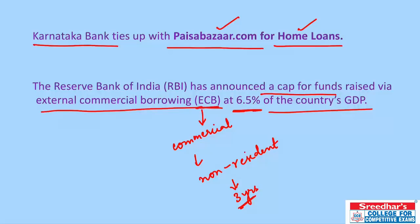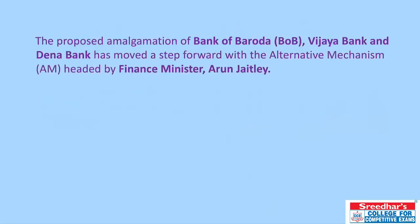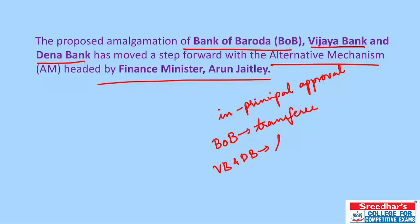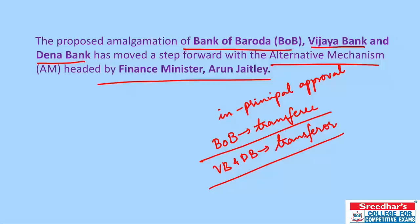The proposed amalgamation of Bank of Baroda, Vijaya Bank, and Dena Bank has moved a step forward with the Alternative Mechanism headed by Finance Minister Arun Jaitley. Under this mechanism, the merger will be given in-principle approval. Bank of Baroda will be the transferee bank while Vijaya Bank and Dena Bank will be the transferor banks. Bank of Baroda will retain its brand identity while the other two will cease to be separate legal entities.